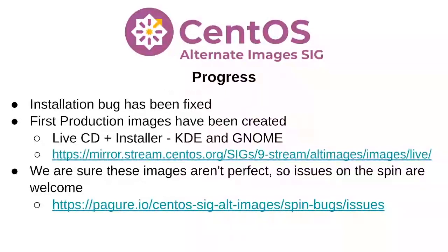So what have we been up to? Since our last CentOS Connect, this has actually been a fairly big thing. We'd had a problem with installs — you'd install it and they wouldn't boot — for over a year. We finally got that bug fixed, and we now officially have some images. We have a KDE image and a Gnome image — live images that you can install.